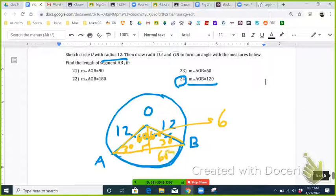So these long legs across from 60 would each be 6 root 3. So that means that AB would have to be 6 root 3 plus 6 root 3. So it would be 12 root 3.